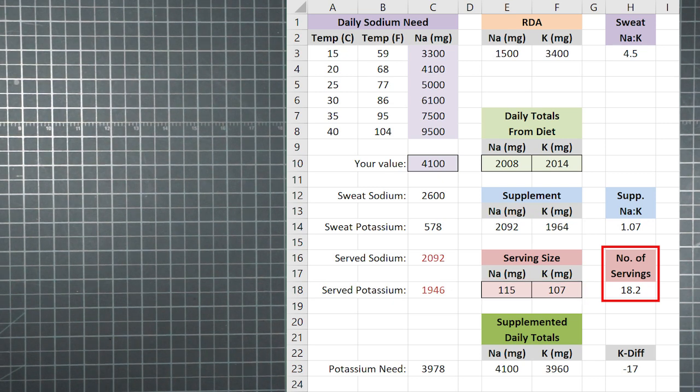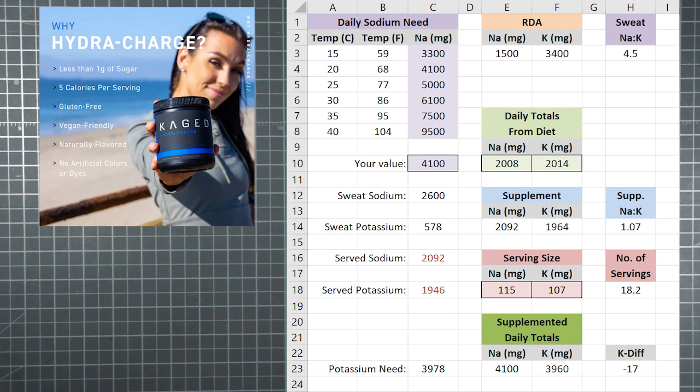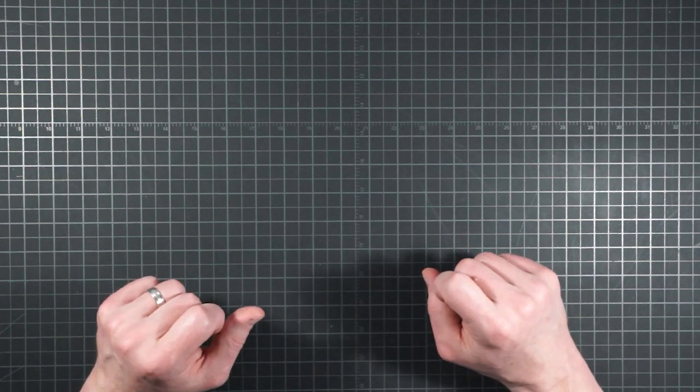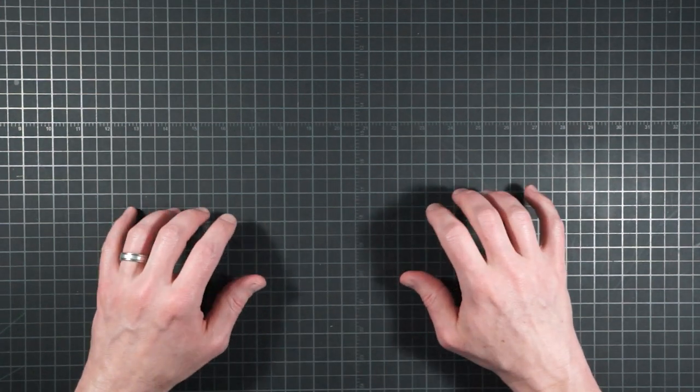So you're looking at having to take over 18 servings a day to meet these needs. Well, this is a 60 serving container of the caged hydrocharge electrolyte powder used in this example. So if you're going to be gone for a week, you'd need to bring more than two of these tubs with you. That's almost a pound and a half worth of this stuff. As dedicated as I am to crafting an optimized system, that just doesn't seem practical to me.